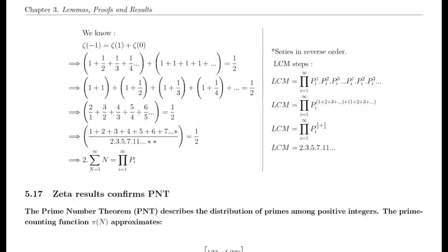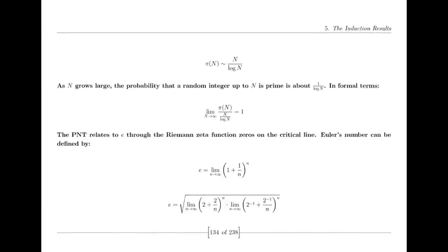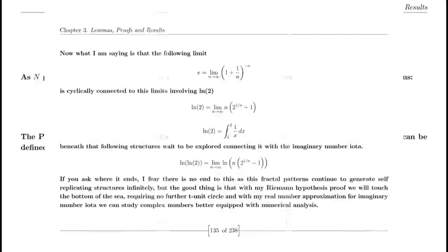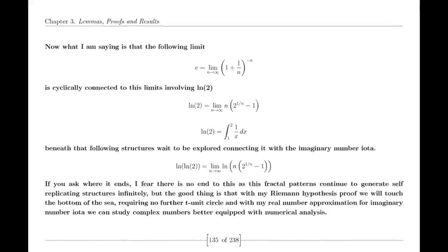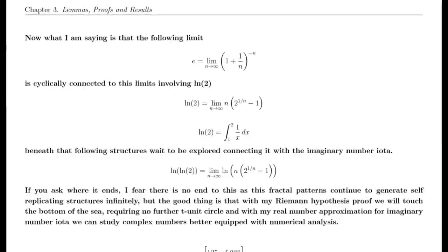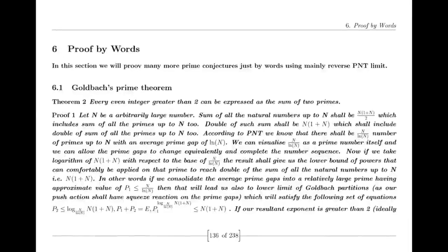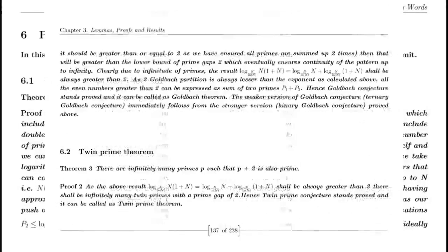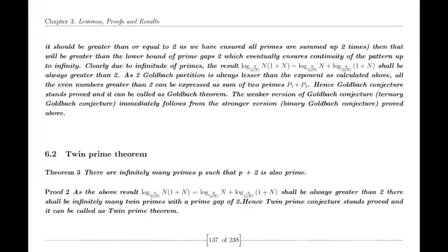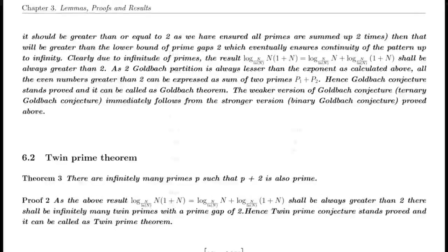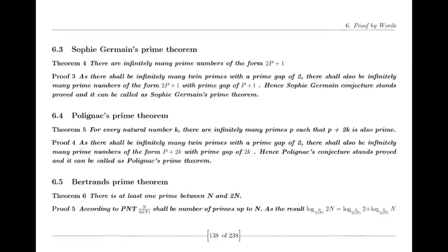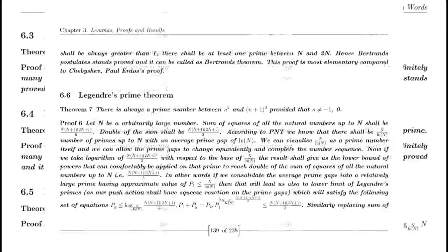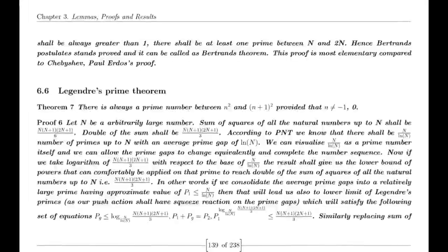Euler's number e, approximately 2.71828, is the base of natural logarithms and plays a fundamental role in mathematics. Euler expanded on Bernoulli's findings, exploring the properties of e and its connection to the exponential function and calculus. I present to you another intriguing limit in the form of ln(2), which can help mathematicians introduce and understand algebraic cycles. This concept is central to the famous Hodge conjecture — a profound and still unproven conjecture dealing with the relationship between algebraic cycles and the topology of algebraic varieties.